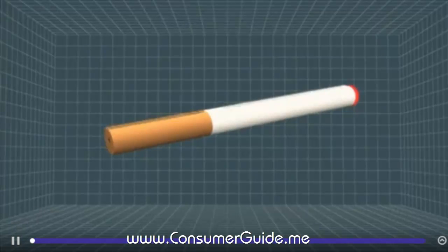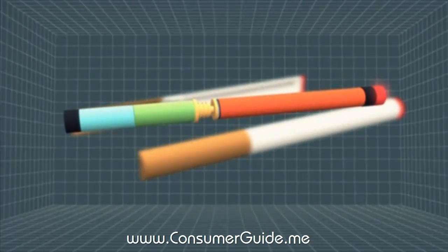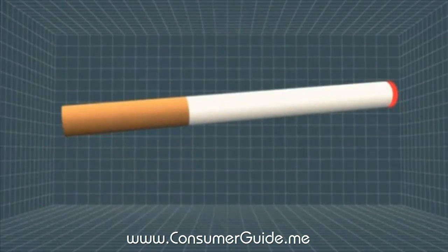The e-cigarette is comprised of five main parts: an LED light that glows when the smoker takes a drag, a microprocessor, a lithium-ion battery, an atomizer, and a nicotine cartridge.